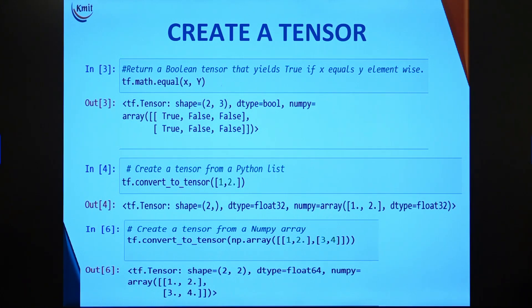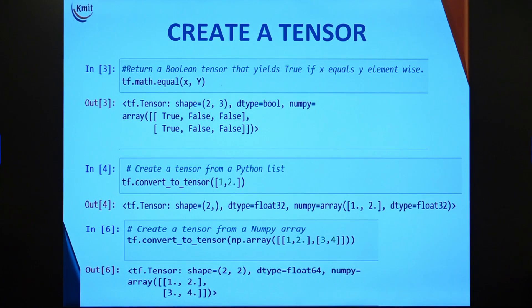Similarly, you can create a tensor from a NumPy array. Create a 2 by 2 NumPy array, for example [[1, 2], [3, 4]], and pass it to tf.convert_to_tensor. With a single line command you get a tensor of shape 2 by 2 with data type float64. This is how you convert both a Python list and a NumPy array into tensors.